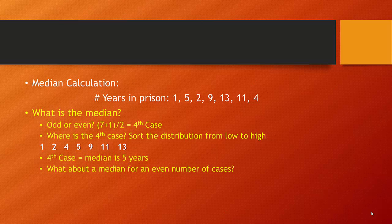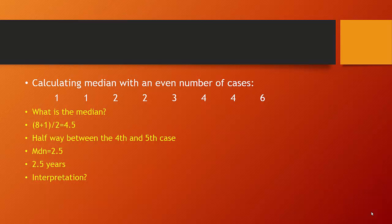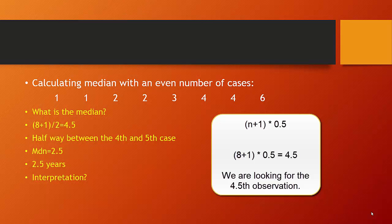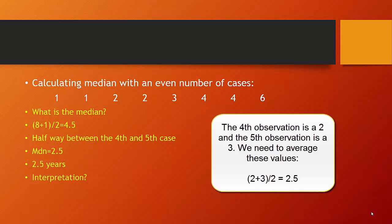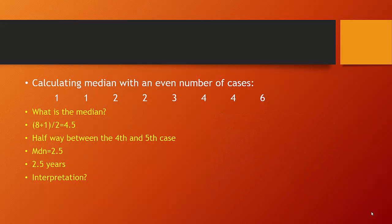With an even number of cases — say 1, 1, 2, 2, 3, 4, 4, 6 — we have eight observations. Using the formula: 8 + 1 = 9, times 0.5 = 4.5. So the median falls between the fourth and fifth observations. The fourth observation is 2 and the fifth is 3. We average them: (2 + 3) / 2 = 2.5. The median is 2.5 years in prison.